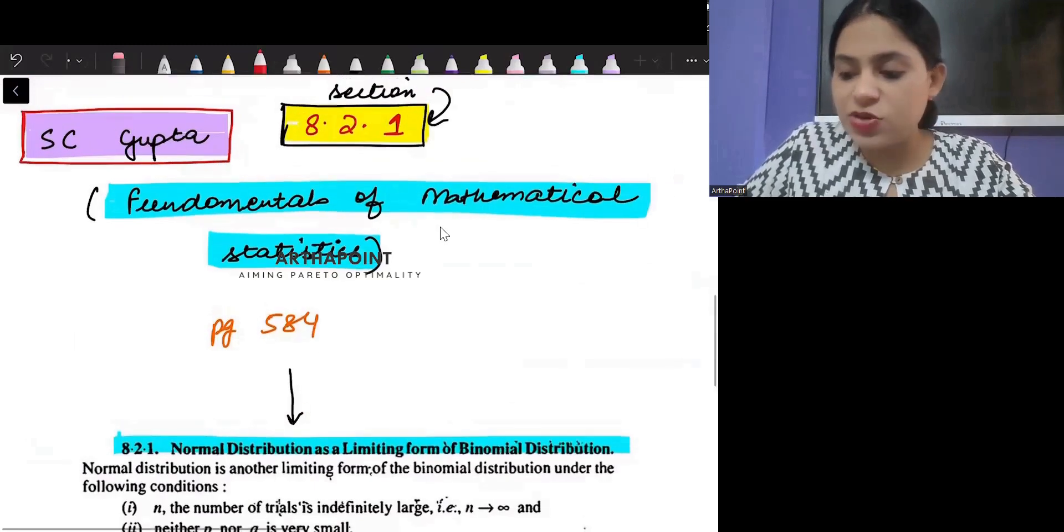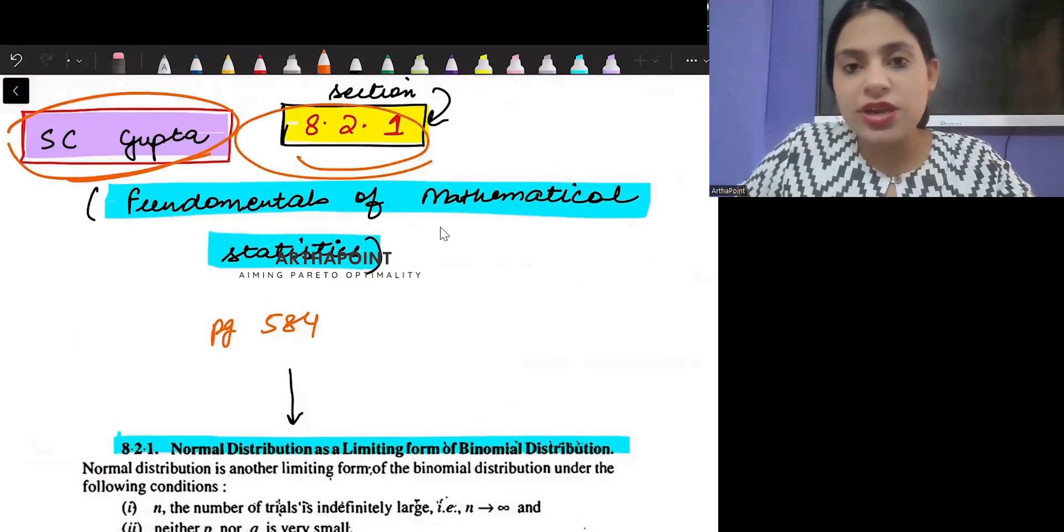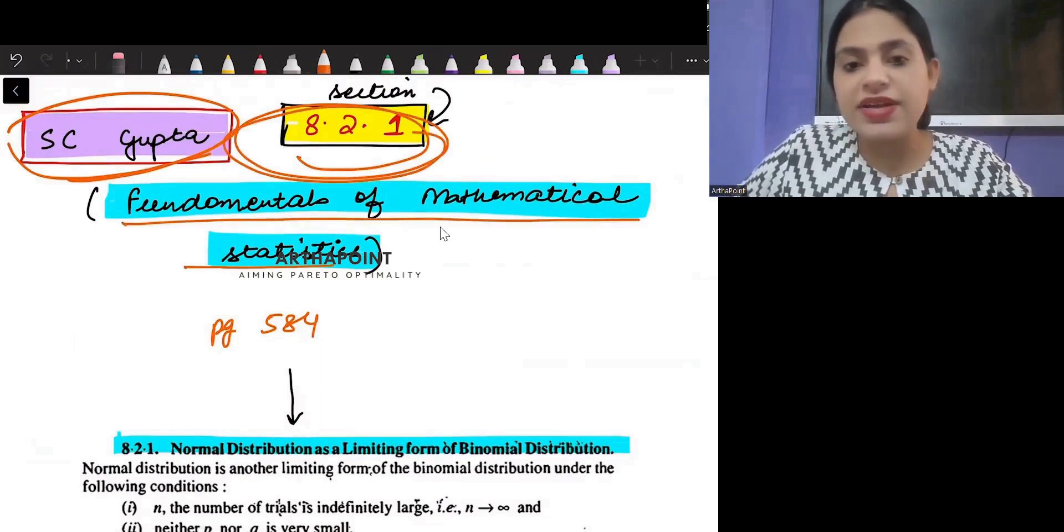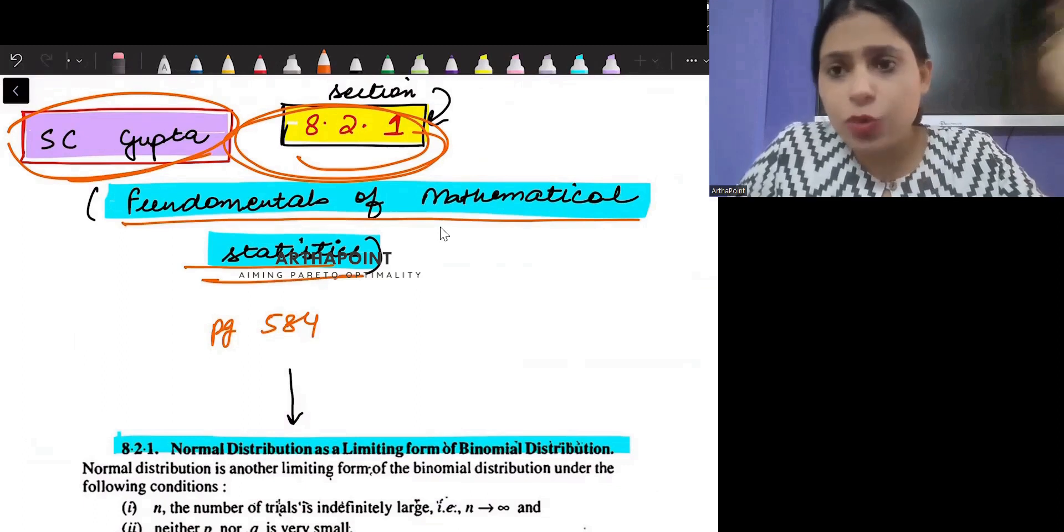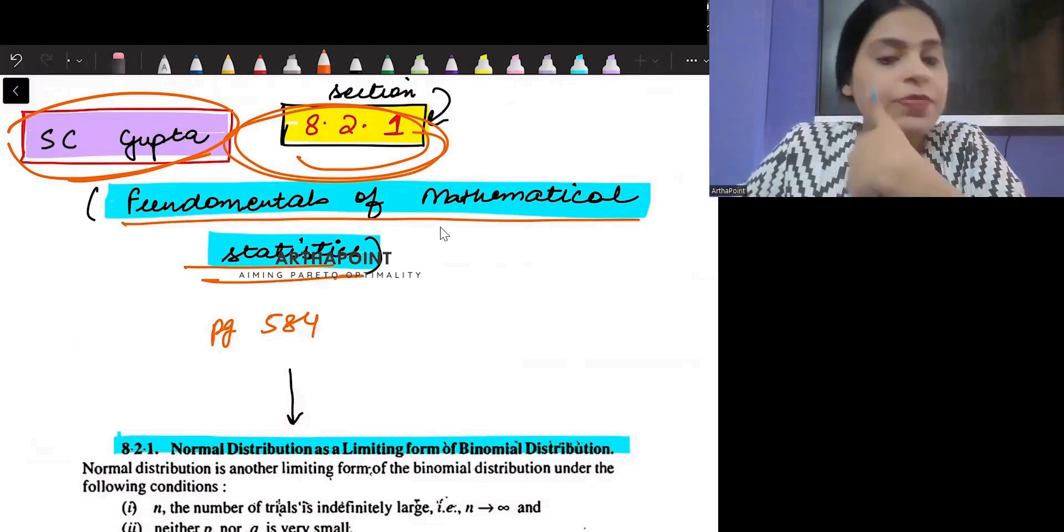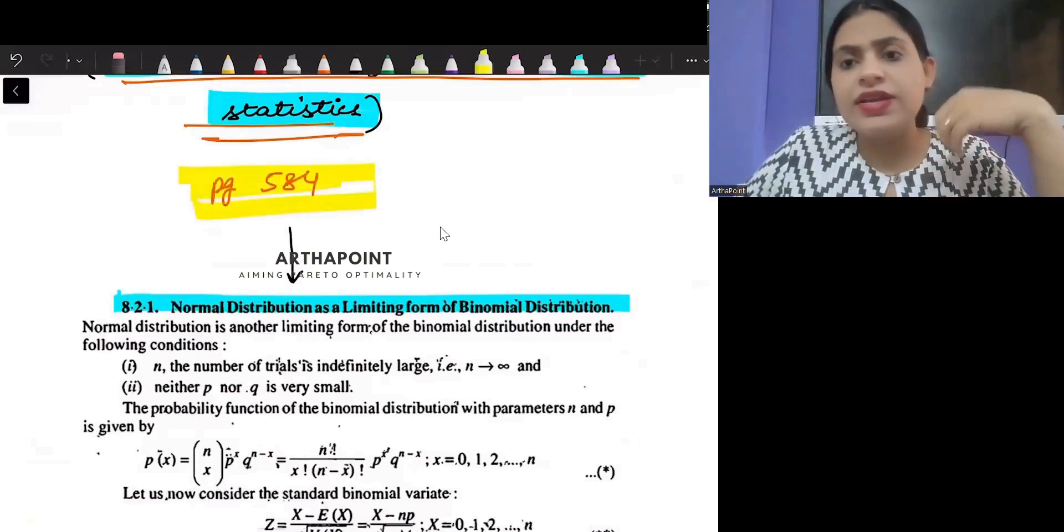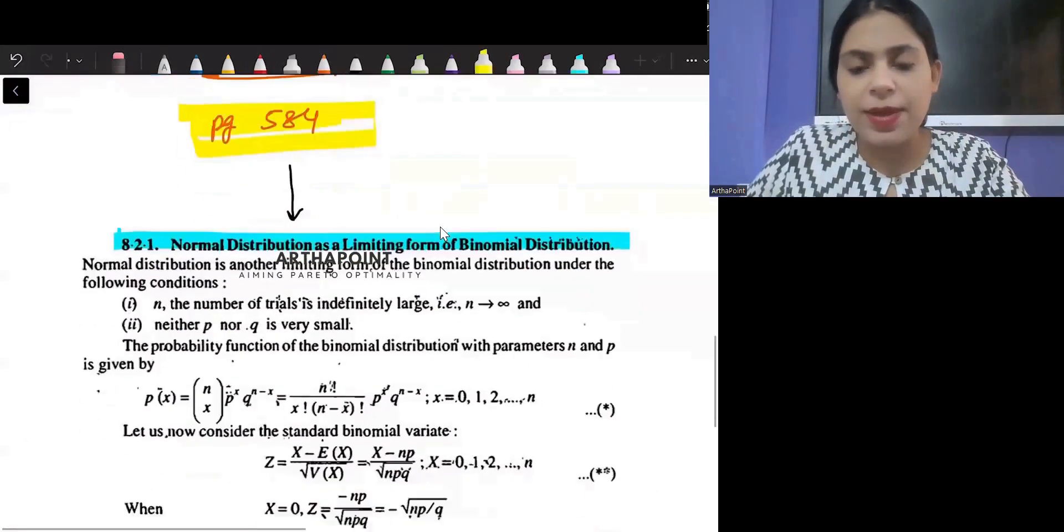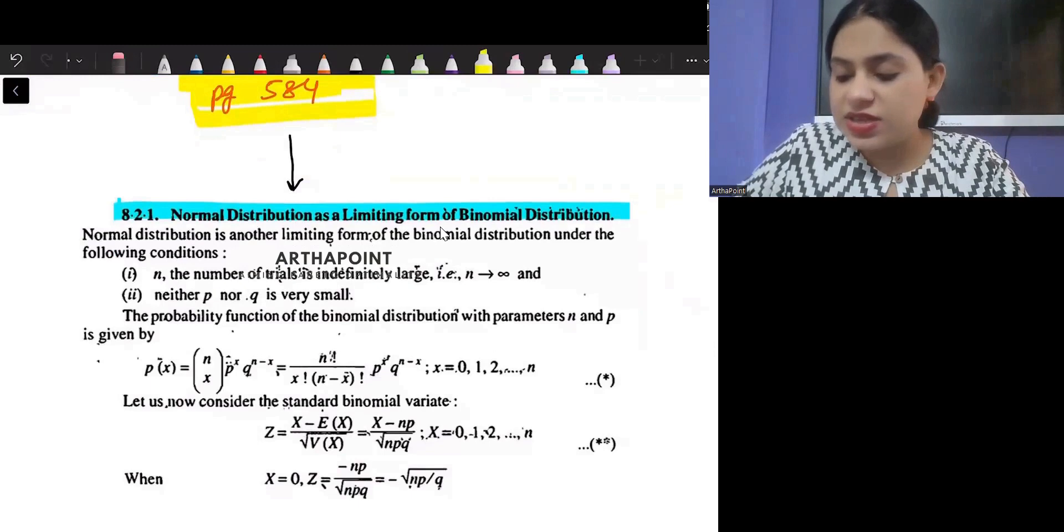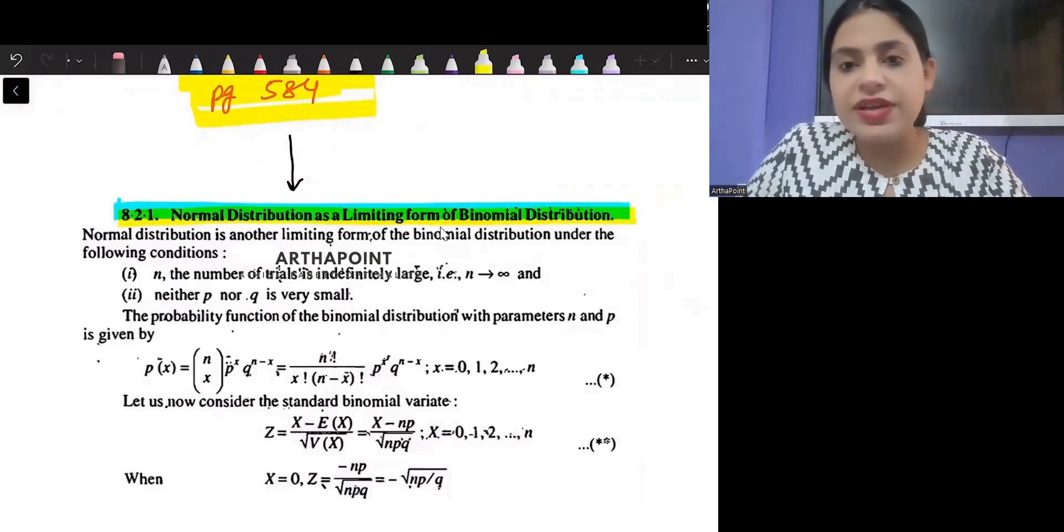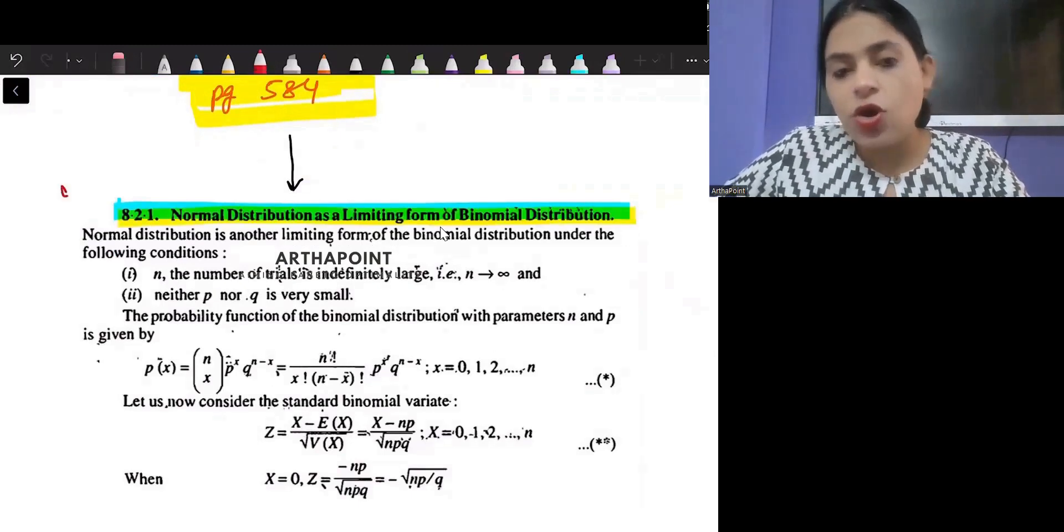The other thing that you can go ahead and also do is you can go to S.C. Gupta. S.C. Gupta has section 8.2.1. The book name is Fundamentals of Mathematical Statistics. Again, a book that we commonly follow. And you can go to page 584 of this book. In this page 584, it says normal distribution as a limiting case of binomial distribution.